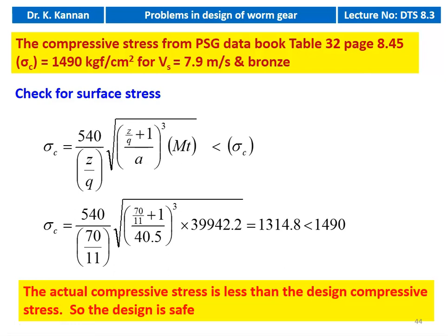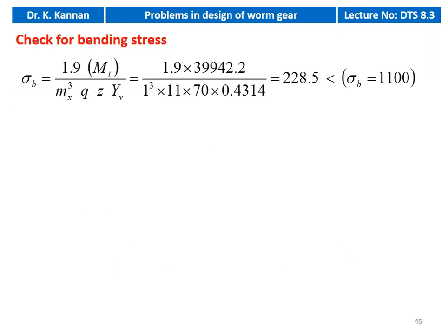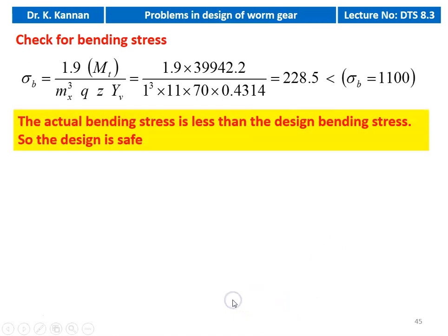The design compressive stress check confirms the worm gear drive is safe. We check for the bending stress: sigma_b = 1.9 × MT_design / (MX³ × Q × Z × Y_b) = 1.9 × 39,942.2 / (1³ × 11 × 70 × 0.4314) = 228.5 kgf/cm², which is less than the design bending stress of 1100 kgf/cm². The actual bending stress is less than the design bending stress. The design is safe.